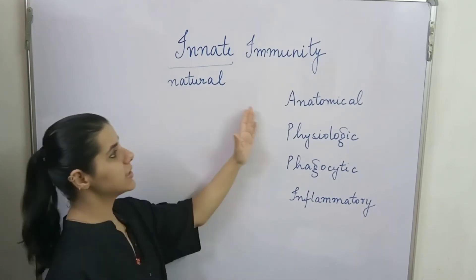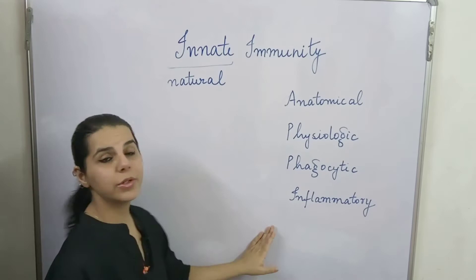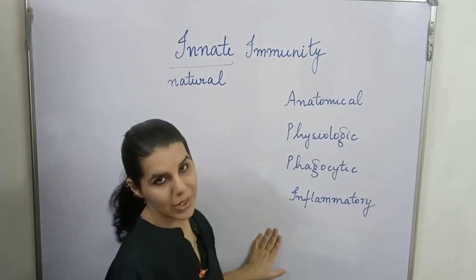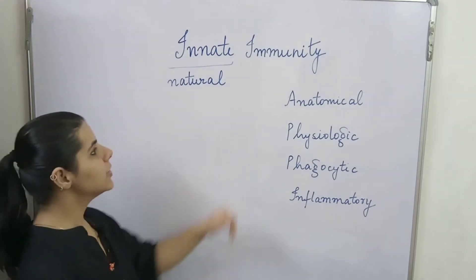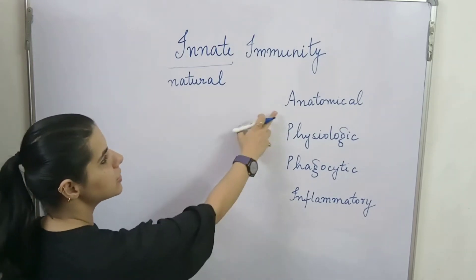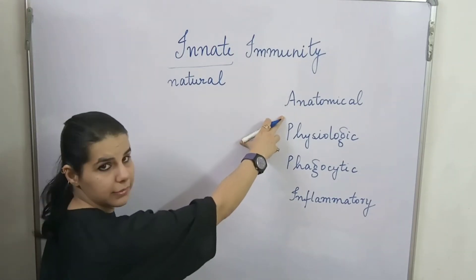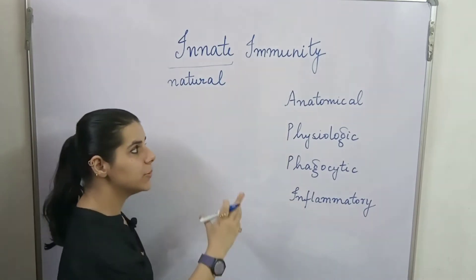The first barrier is the anatomical barrier, the second is the physiologic barrier, the third is the phagocytic barrier, and the fourth is the inflammatory barrier. Let's discuss each one of these barriers.